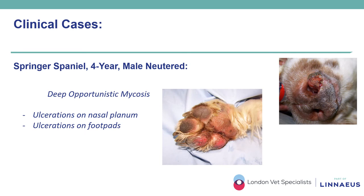A four-year-old male neutered Springer Spaniel presented with a history of progressive ulceration of the nasal planum and the footpads of all four feet. Due to a previous diagnosis of immunomediated hemolytic thrombocytopenia, this dog had been treated for several months with immunosuppressive doses of oral prednisolone and cyclosporine, and the history suggested a possible deep opportunistic infection caused either by bacteria or fungi. Histopathological examination of skin specimens revealed the presence of a deep mycosis most likely caused by Alternaria alternata, ubiquitous saprophytic fungi found in various soil and organic materials, with infections developing via wound contamination through wood splinters and bites. Immunosuppressed individuals may be at risk of developing disseminated disease.